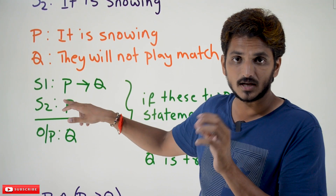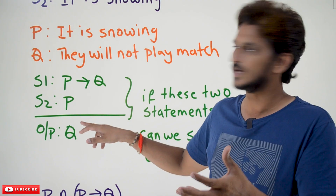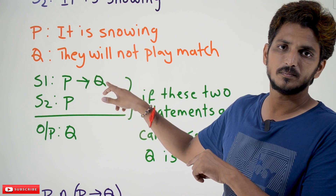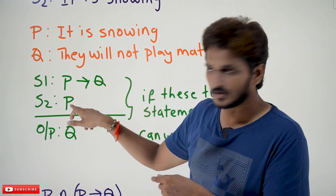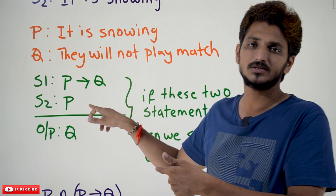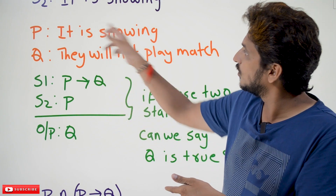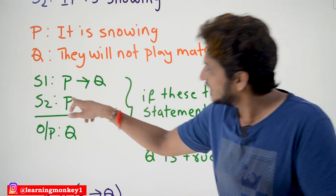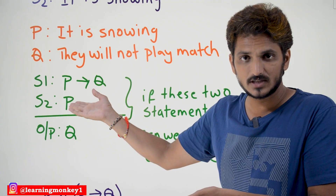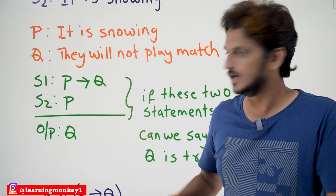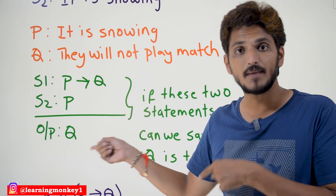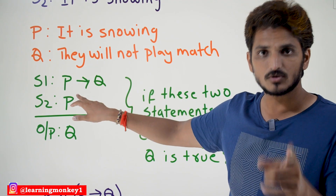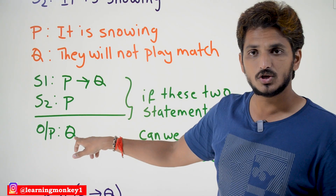S1 and S2 are both stated to be true. P implies Q is true when: if P is true then Q has to be true. They are also saying that S2 — statement P — is true, meaning P happened: it is snowing. So from these two statements we can conclude that Q is going to be true — they will not play match. If someone tells you these two statements are true, then you can definitely confirm that Q is going to be true.